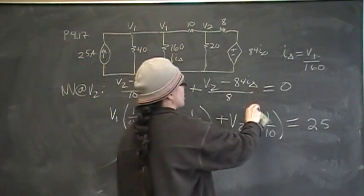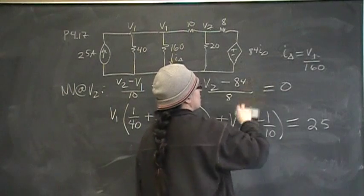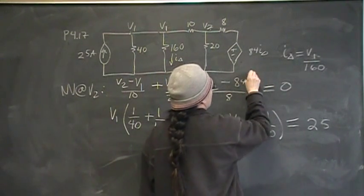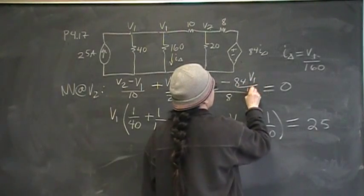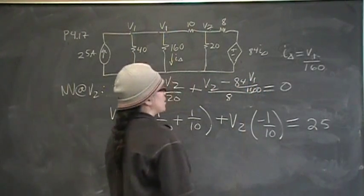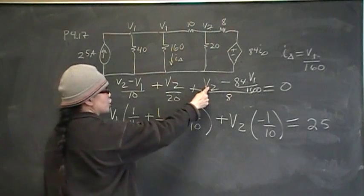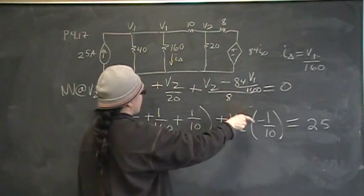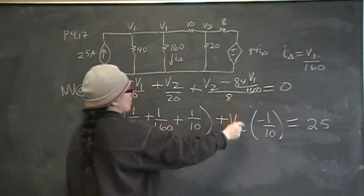But, I delta is really V1 over 160. So this is really 84V1 over 160. That's what I have. So in my numerator I have V2 minus 84 times V1 over 160, whatever that is. All of that is over 8.